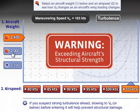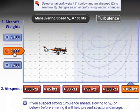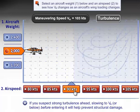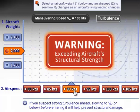Now, when we decrease weight by burning off fuel, it actually gets worse. So let's try to go through here at 90 knots. I'm still exceeding structural weight.